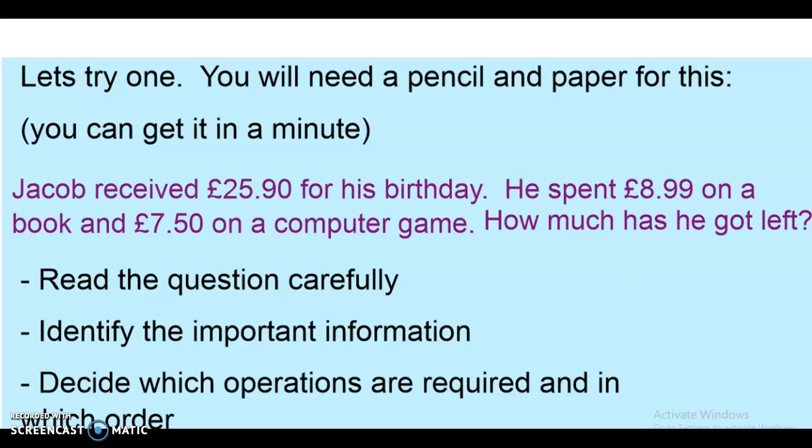Jacob received £25.90 for his birthday. He spent £8.99 on a book and £7.50 on a computer game. How much has he got left? So obviously reading the question very carefully is important. You then need to identify the important information. You're used to doing these from when you've done various word problems before. Identify all of the important information, not just the numbers. The words will give you clues as to which operation you need to use.